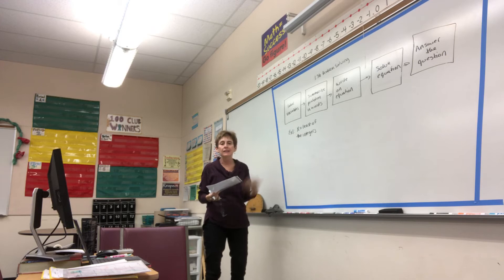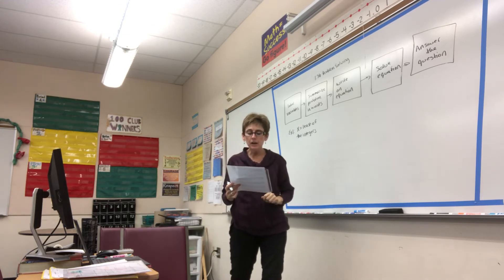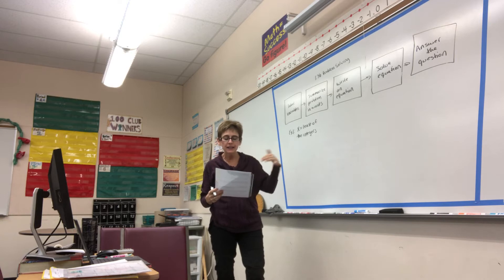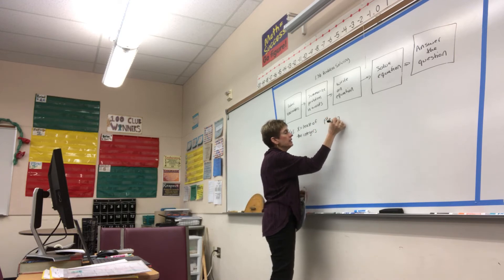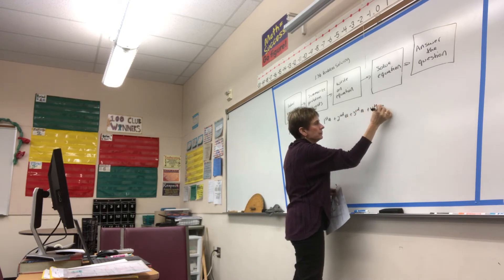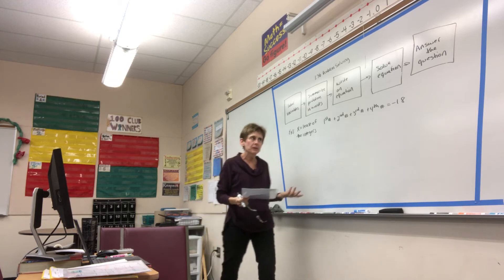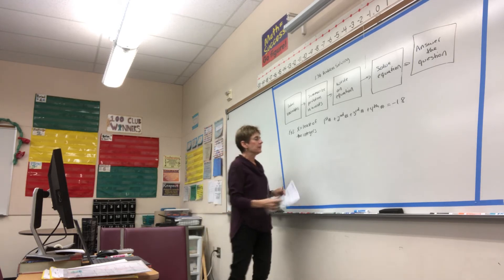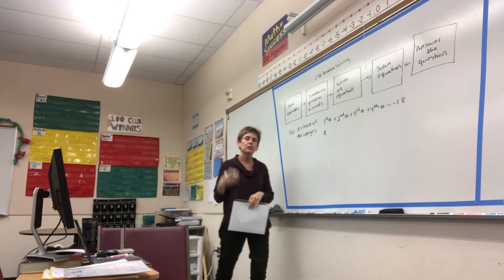Now I've done step one — label the variable. Next I want to summarize the problem in words. The question says the sum of four consecutive integers is negative 18, so I know I'm adding up four integers to make negative 18. I can write: first number plus second number plus third number plus fourth number equals negative 18. If x is the least of these, the first number is just x, because consecutive integers are right in a row with the first being the smallest.